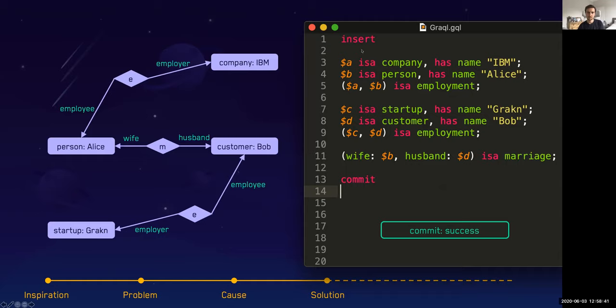To insert that, the syntax is the same as the way how you would query for data. We would say dollar A, again this is a variable name, is a company with the name IBM. Then there's also a person that has the name Alice. We want to connect dollar A and dollar B in an employment relation. So here we say IBM is employing Alice. Then we also want to say startup employs customer. Remember, we haven't explicitly declared this in the schema, but because of their parents, they can actually employ each other.